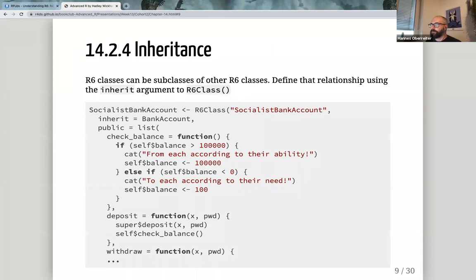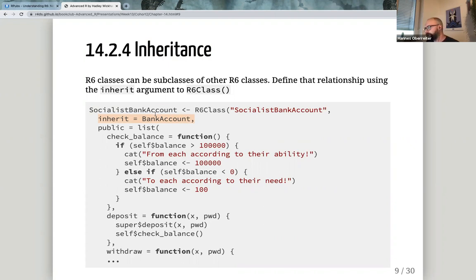Inheritance — in object-oriented programming, inheritance is a big part that makes your code cleaner and less redundant. This also works with R6. What's new here is that Hadley creates a `SocialistBankAccount` class and uses `inherit = BankAccount`. That line of code is how inheritance works in R6, and every method and every variable in `BankAccount` will be inherited.